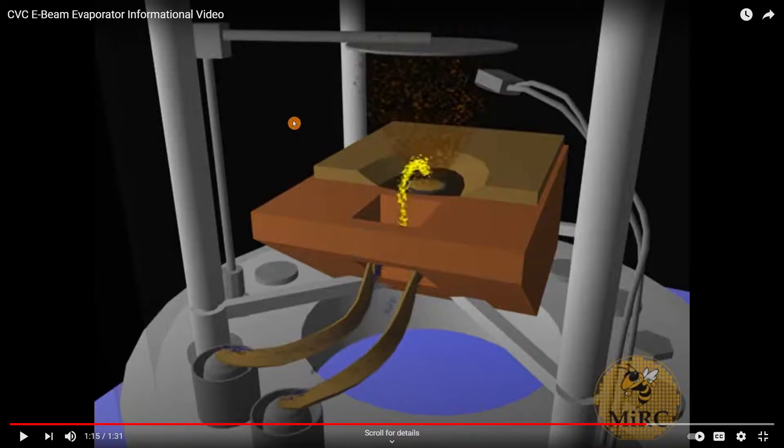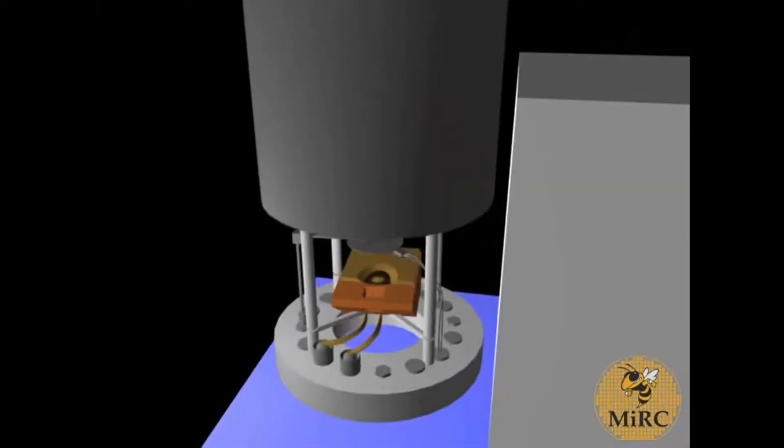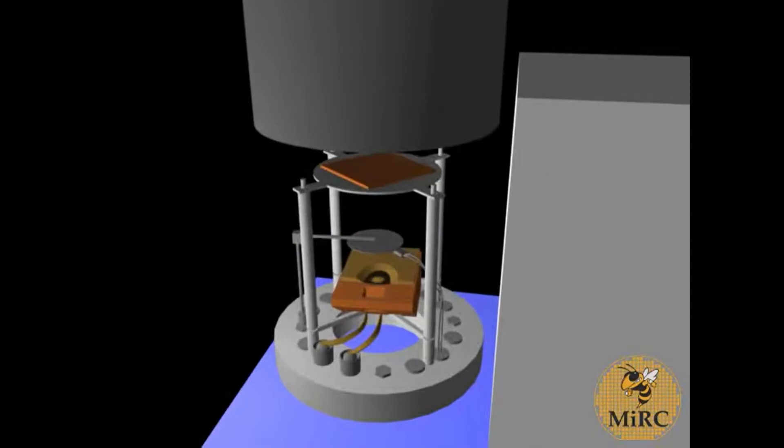After you cool down, you open the chamber and take the substrate out. You've finished the evaporating process. The shutter is closed, and the pressure inside the chamber is then increased to atmospheric pressure before the chamber is opened.